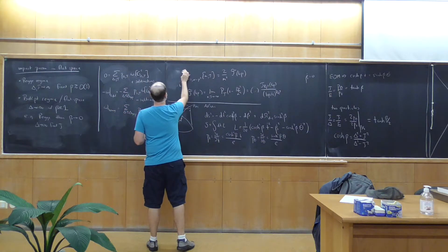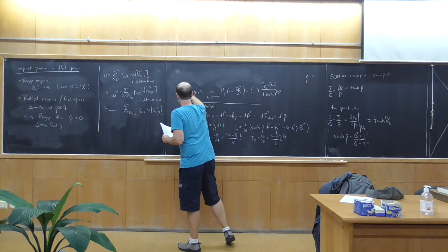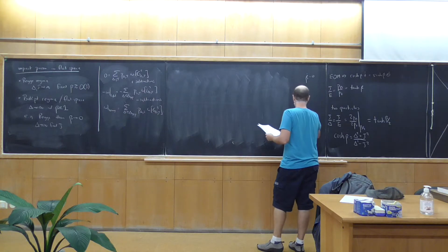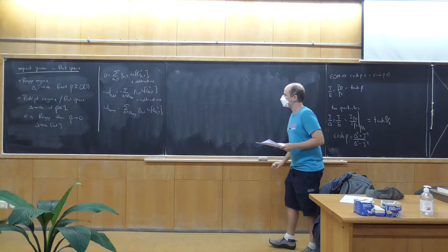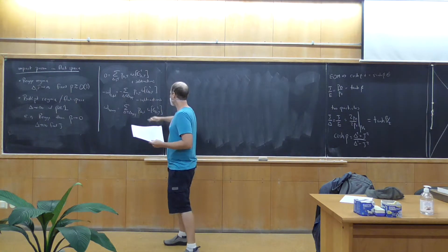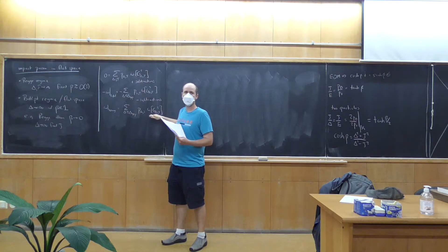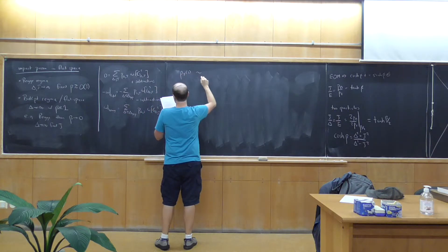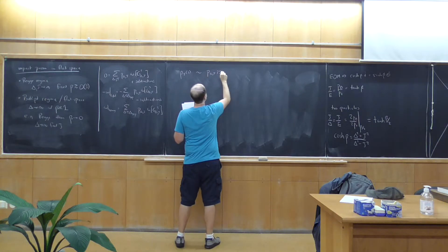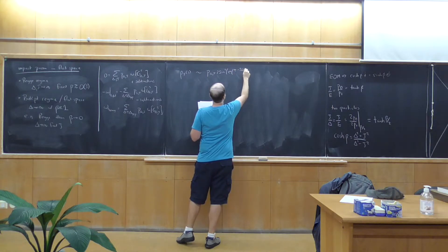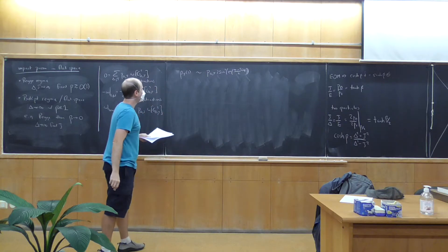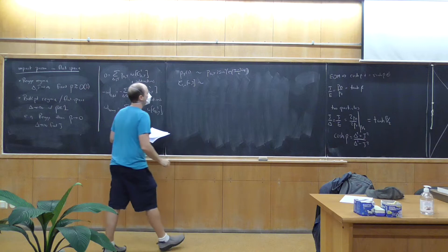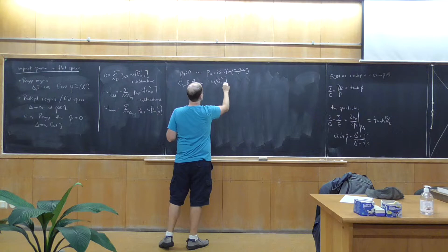We split the sum rule into a light part and a heavy part. Minus omega_light is minus the contribution from all operators of dimension less than some delta_gap, given by a sum over P_{delta,J} times omega of G_{delta,J}. And omega_heavy is the sum for everything with dimension greater than delta_gap. Our sum rule is simply: minus omega_light equals omega_heavy.